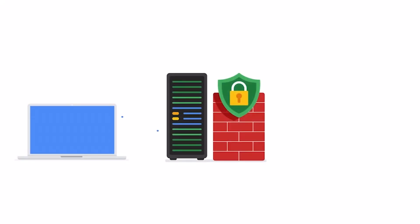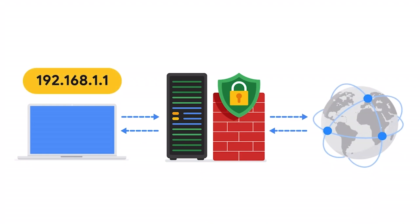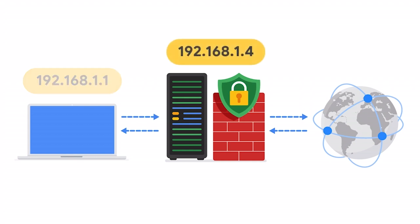The proxy server is a dedicated server that sits between the Internet and the rest of the network. When a request to connect to the network comes in from the Internet, the proxy server will determine if the connection request is safe. The proxy server uses a public IP address that is different from the rest of the private network, which hides the private network's IP address from malicious actors on the Internet and adds a layer of security.